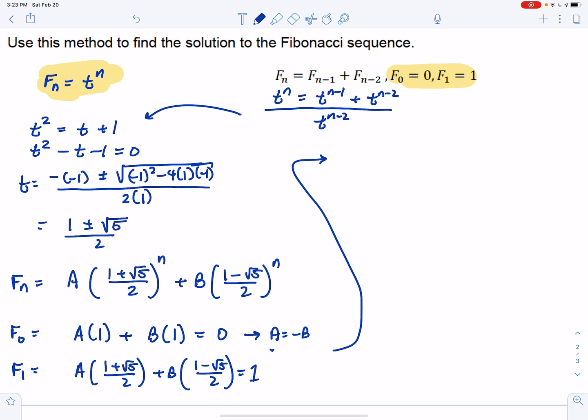So we have—actually, why don't I go B is equal to negative A. That might be a little bit easier. So I'm going to have A times 1 plus root 5 over 2, minus A times 1 minus root 5 over 2, equals 1.